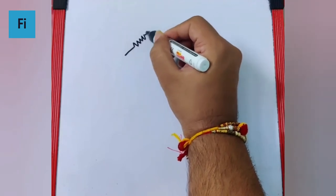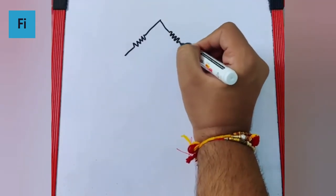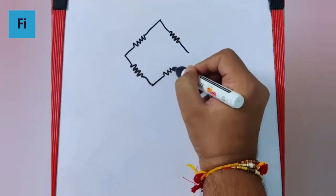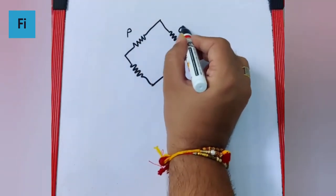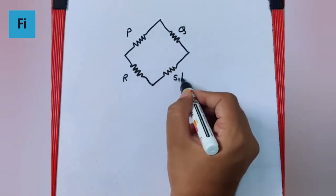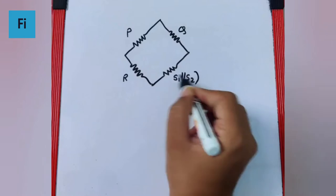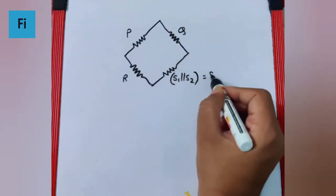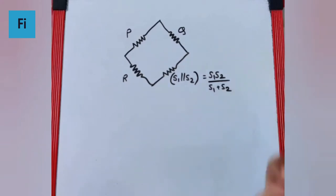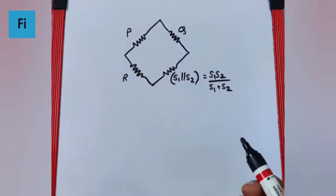If I draw the diagram: this is P, this is Q, this is R, and this is S1 parallel to S2, which equals S1·S2/(S1 + S2). Now the condition for it to be balanced: